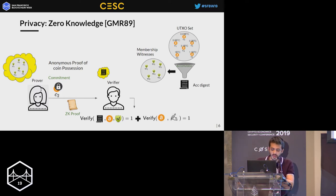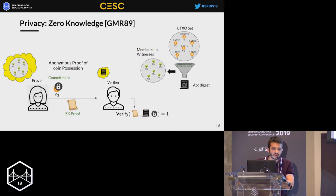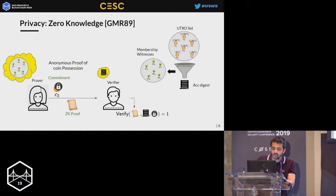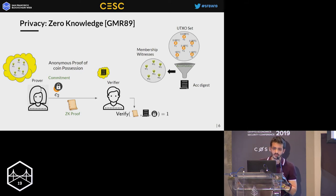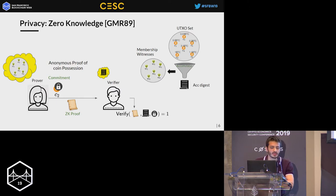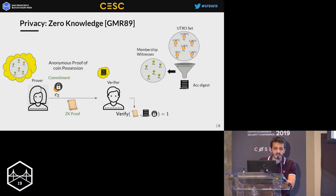The prover commits with a hiding cryptographic commitment to her coin, sends it to the verifier, and also computes a zero-knowledge proof which she sends to the verifier. The verifier checks this proof and is convinced about the possession statement. The key property is that the verifier is convinced about the statement but cannot learn anything else — absolutely nothing except that the statement the prover wants to prove holds. In this case, possession of the coin, which protects the prover's privacy.